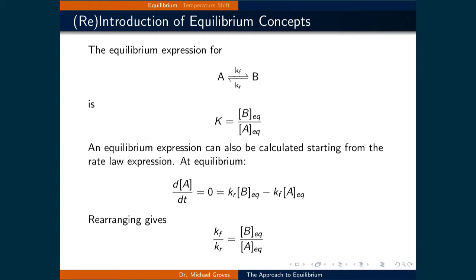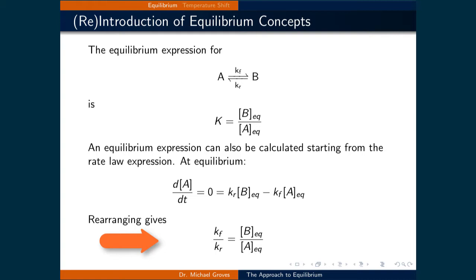An equilibrium expression can also be calculated starting from the rate law expression. At equilibrium, the rate of change of A is 0, which is still equal to Kr times the equilibrium concentration of B minus Kf times the concentration of A at equilibrium. If we rearrange this expression, we get Kf over Kr being equal to the concentration of B at equilibrium over the concentration of A at equilibrium.